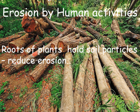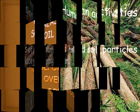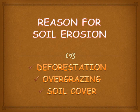Erosion can also happen due to the activities of humans. The roots of plants hold soil particles together and reduce erosion, but human activities have reduced plant cover and caused an increase in soil erosion. Some reasons for soil erosion include deforestation, overgrazing, and removal of soil cover.